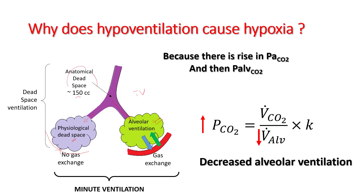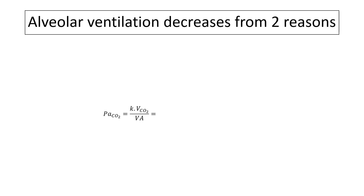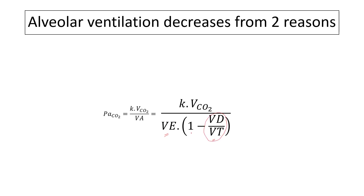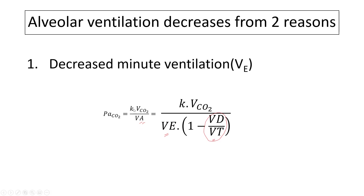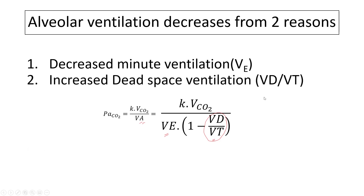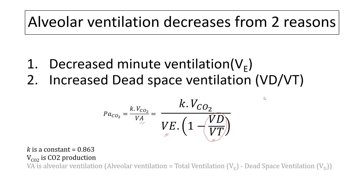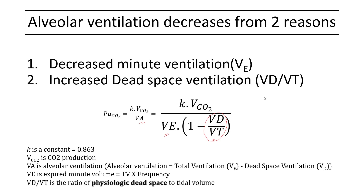Alveolar CO2 and the CO2 in the capillaries have a pretty good exchange rate between them. Alveolar ventilation depends upon your minute ventilation — how much of your tidal volume goes in per minute — and the fraction that is going to the dead space. If you subtract the dead space fraction from one and multiply by minute ventilation, you get the alveolar ventilation. Alveolar ventilation will decrease if you have decreased minute ventilation, or if the proportion of dead space ventilation increases. The dead space we are talking about here is the physiological dead space, not the anatomical dead space.